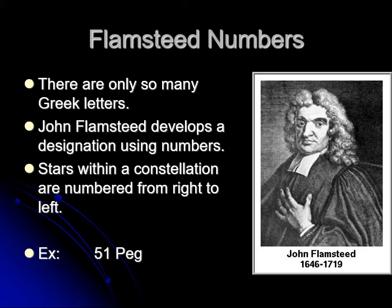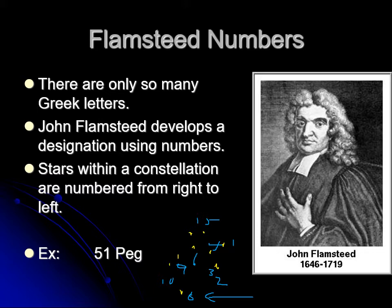John Flamsteed came up with another way of designating stars. His idea was to take a constellation with all its stars and simply label them 1, 2, 3, 4, 5 and so on, going from right to left across the constellation — we'll explain why he did that later. This way you could number all the stars, and as long as he could see them, each one got a number. He published a catalog naming all these stars.